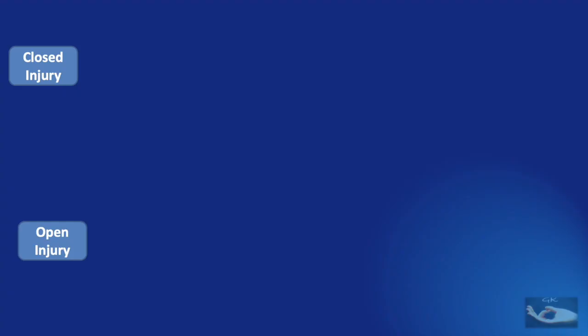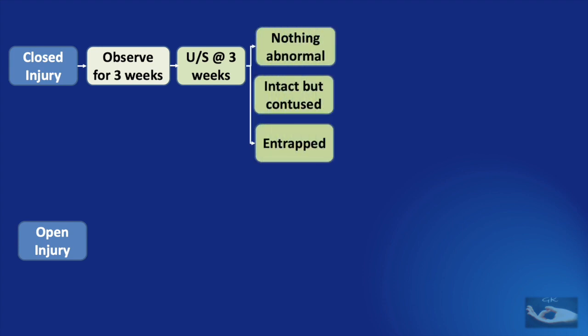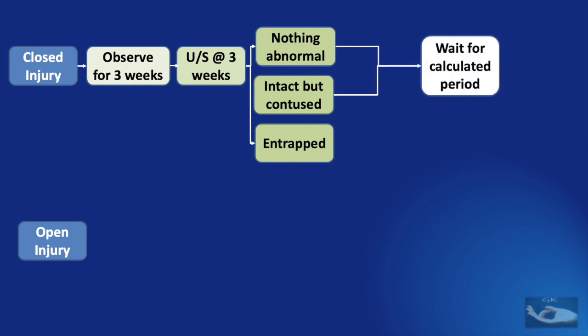First, we shall consider the simplified algorithm of management of radial nerve palsy in closed and open injuries. The injury to the radial nerve could present with a closed injury or an open injury. If it is a closed injury, first we need to assess the patient and observe for three weeks. At the end of three weeks, we can do an ultrasound to look for any injury to the nerve. On ultrasound, we could find nothing abnormal, the nerve intact but contused, or the nerve entrapped in an associated fracture of the humerus.